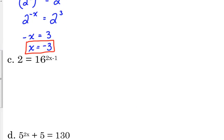Okay, so you get c. 2 is equal to 16 to the 2x minus 1. Well, 16 is a power of 2. 16 could be written as 2 to the 4.